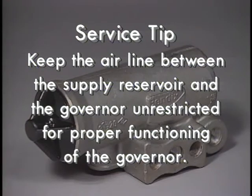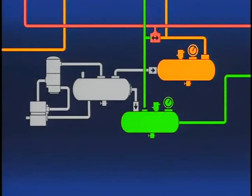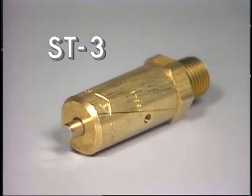If either the governor or compressor unloader mechanism fail to function, the compressor would continue to compress air. To protect the air systems against a failure of either the governor or compressor unloader mechanism, a safety valve like the Bendix ST3 is installed on the supply reservoir or air dryer if the vehicle is so equipped.